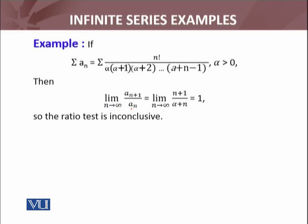Then limit as n approaches infinity of a_{n+1} over a_n. The ratio comes out to be (n+1)/(α+n). When n approaches infinity, you can write this as (1 + 1/n) divided by (α/n + 1). Taking n common on both sides, and taking the limit, 1/n goes to 0, so we will have 1. So the ratio test is inconclusive for this particular example.